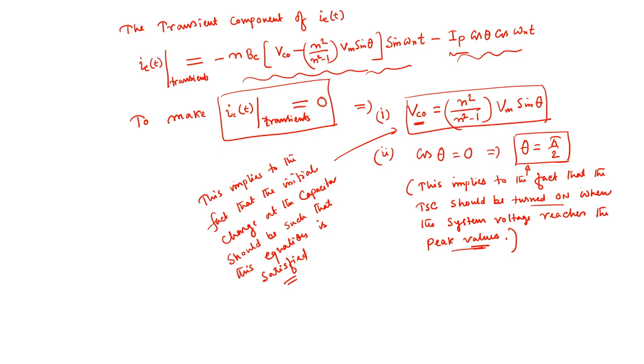Practically, it is very difficult to satisfy both conditions simultaneously. Why this is so, and how we can reduce the transient even if we cannot eliminate it completely, I will discuss in the next lecture. Thank you very much for your attention.